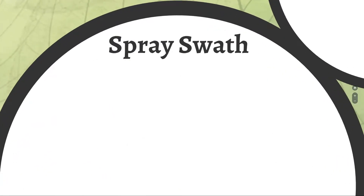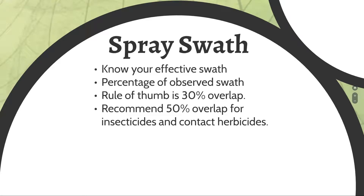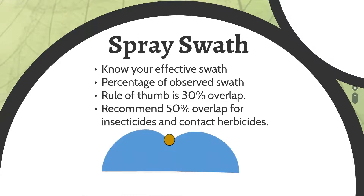Swath width on a boomless sprayer is not going to be your measured or observed swath width. A lot of nozzle labels will say that at 40 PSI it's spraying 52 feet wide. Does your sprayer actually spray 52 feet wide? Very rarely. As a general recommendation, we calibrate on basically a 30% overlap — measure how wide it's actually spraying, multiply by 0.7, which leaves 70% of the swath for coverage. That generally works for most herbicides.